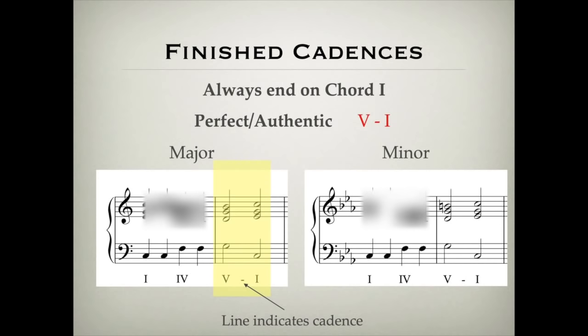Let's have a listen to the example again, but this time in C minor. Again, you can hear how this perfect cadence at the end — chords V to I — gives this definite, complete, finished sound to it.